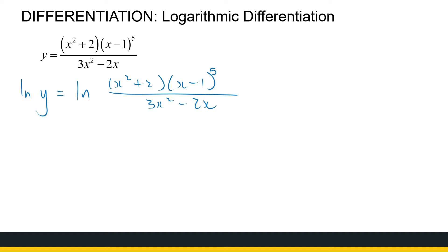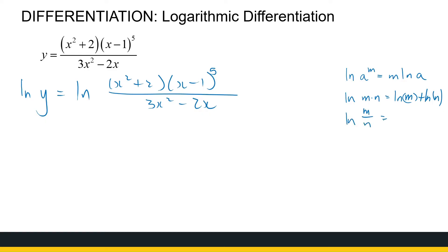Now I have ln of y and ln of something. Since y is a function of x, I'll have to use implicit differentiation to get dy/dx. But before I do that, I look at the right-hand side — ln of that expression — and I recognize that logarithmic properties can help me take it apart. I know that ln of a to the power m is m·ln(a), ln of m times n is ln(m) plus ln(n), and ln of m divided by n is ln(m) minus ln(n).